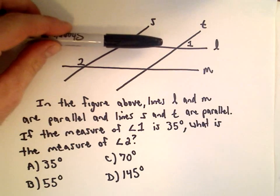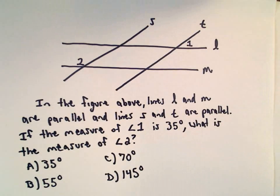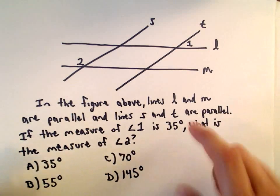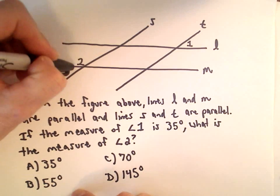Okay, so in the figure above, lines L and M are parallel and lines S and T are parallel. We know that the measure of angle 1 is 35 degrees. We want to know what's the measure of angle 2.